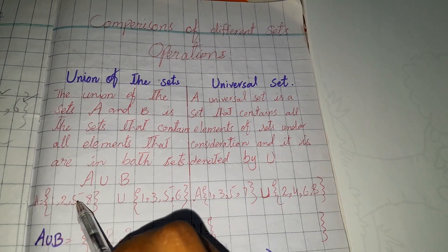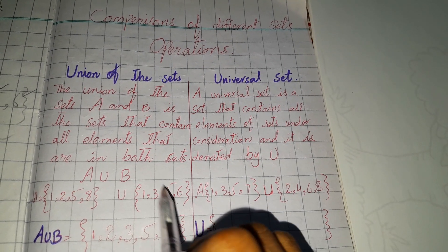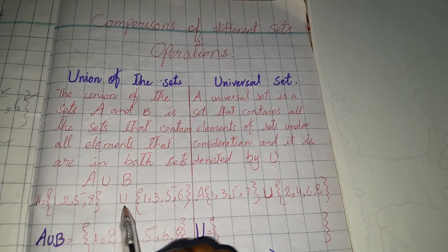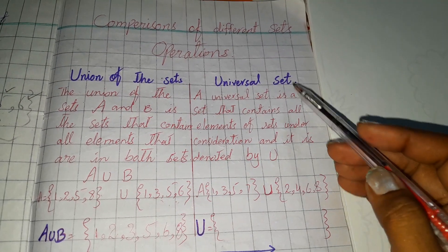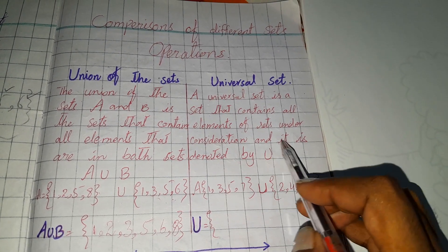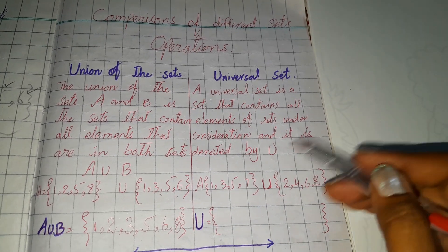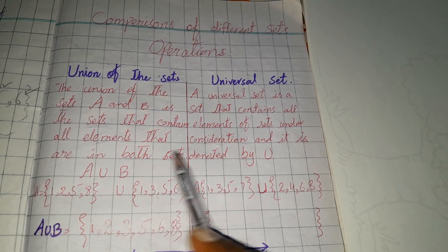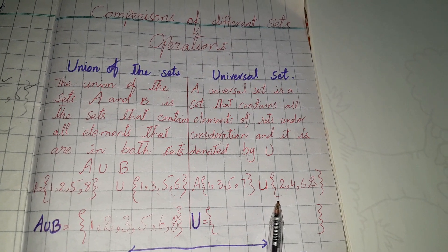All elements which are under consideration and under operation — this sign represents the universal set. The universal set is a set that contains all elements of the sets under consideration, and it is denoted by capital U. The definition of the union of a set and the universal set is essentially the same.